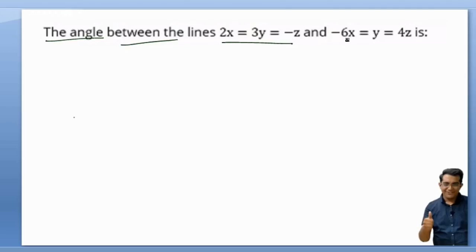The angle between the lines 2x = 3y = -z and -6x = y = 4z is the question which is asked in various past year examinations like West Bengal JEE, even in IIT JEE. It is not in the standard format, so let's make it into a standard format.